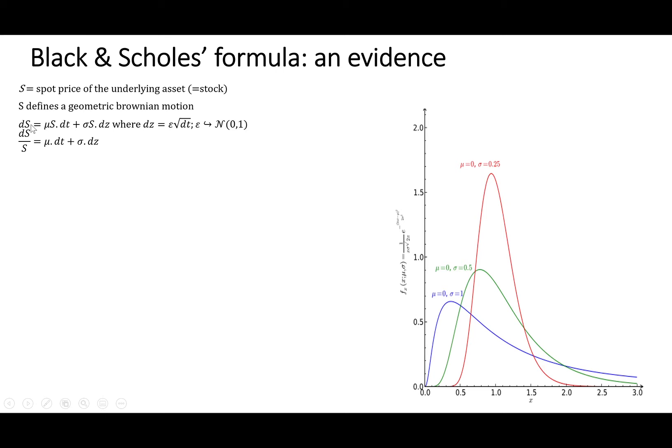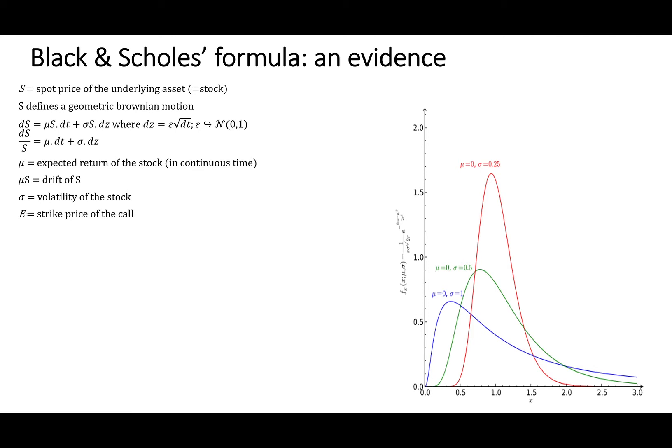We can also say that dS over S is equal to mu*dt plus sigma*dz, mu being the expected return of the stock or the expected return of the underlying asset in continuous time, and mu*S is the drift of S. Sigma is the volatility of the underlying asset or the volatility of the stock, and we are going to write down E as the strike price of the call.